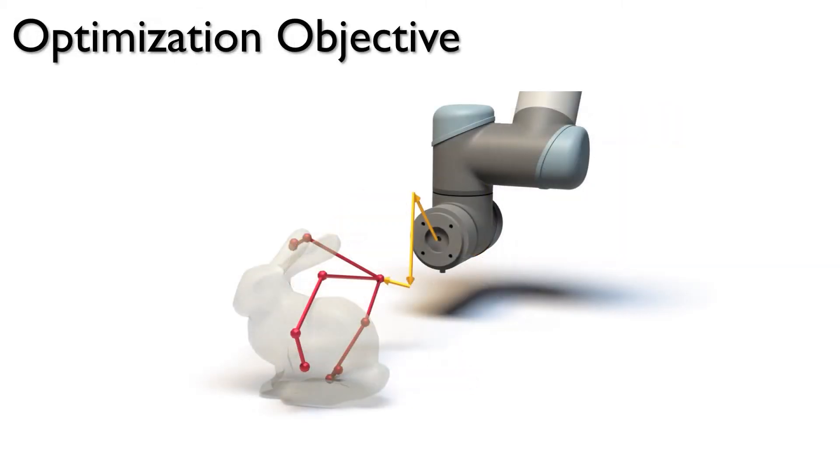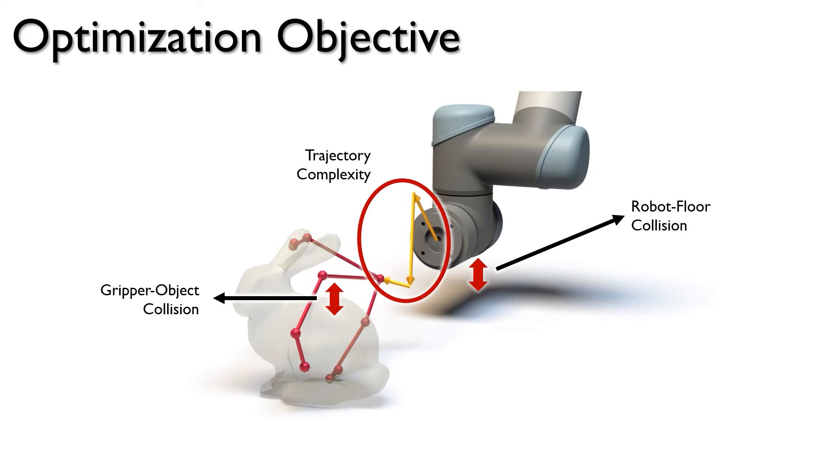Our objective function includes multiple components. First, we penalize the collision between the gripper and the object throughout the course of the insert trajectory. Second, we penalize the collision between the robot arm and the floor. And lastly, we penalize trajectories that are more complex.